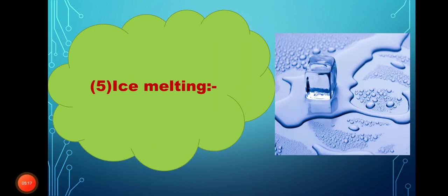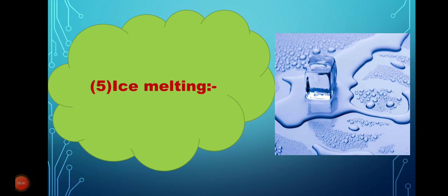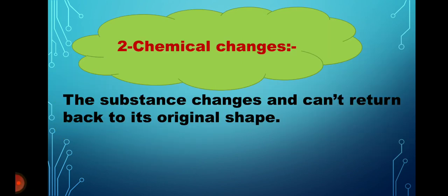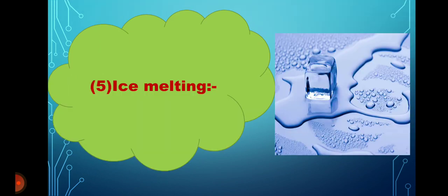When ice melts, it changes from solid to liquid. And we can make the ice return back again to the solid state by putting the water in the freezer. So, the shape is changed only, and it can return back again to its original shape. Ice melting is considered a physical change.